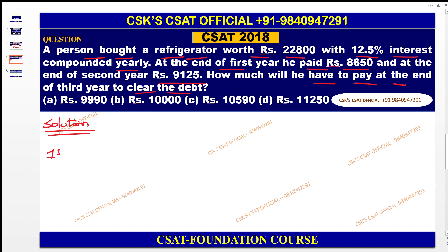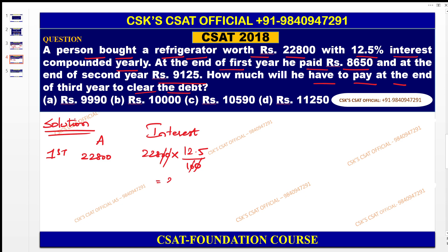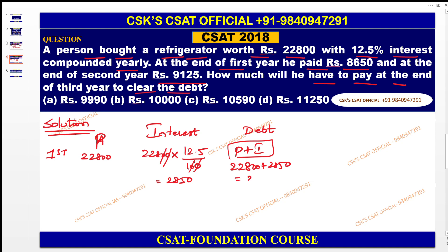In the first year, the amount is rupees 22,800. The interest is 12.5 percent of 22,800, which is (12.5/100) × 22,800 = 2,850. So the total amount is 22,800 + 2,850 = 25,650. The amount paid at the end of the first year is 8,650.